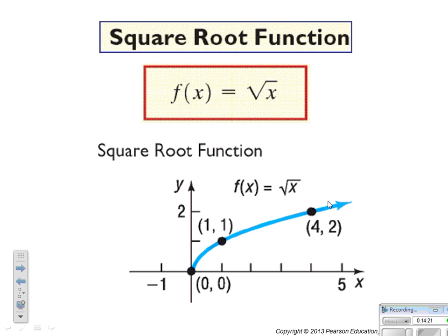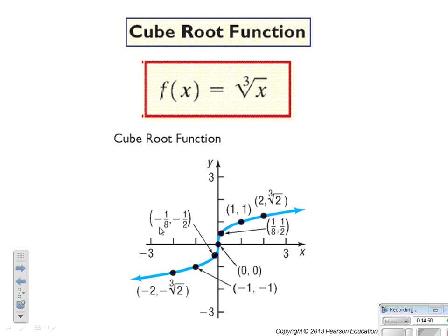We already covered the square root function — do not write it down a second time unless you really feel you need to. Remember, it has a local min at 0, is increasing from 0 to infinity, and the domain and range are all positive real numbers. We already looked at the cube root function as well — no need to write it again.